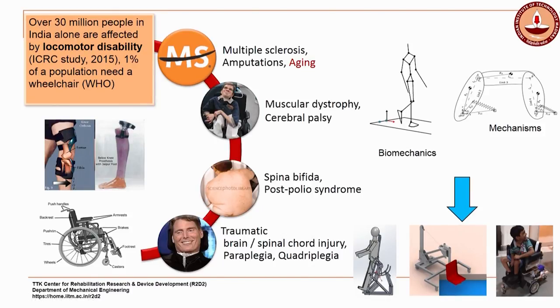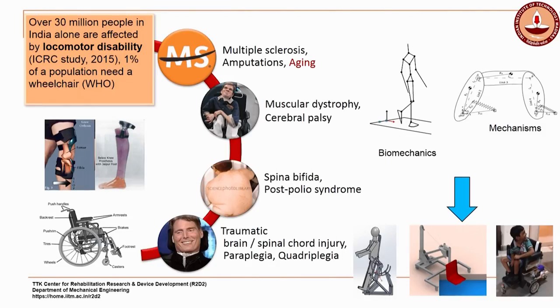Looking at statistics, over 30 million people in India alone are affected by some kind of locomotor disability, meaning they would need some kind of orthosis, prosthesis, or wheelchair — the three broad categories of mobility devices. The causes include spinal cord injury, paralysis, traumatic brain injury, genetic disorders, cerebral palsy, muscular dystrophy, and others. A wheelchair is a mode of transport that, either in an assisted or self-operated manner, can give a person who cannot walk the ability to move.